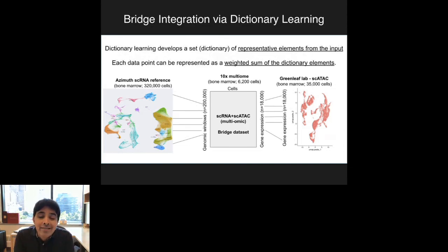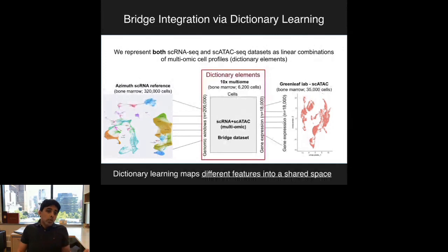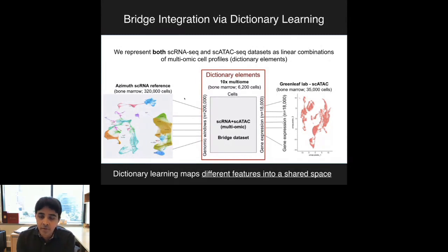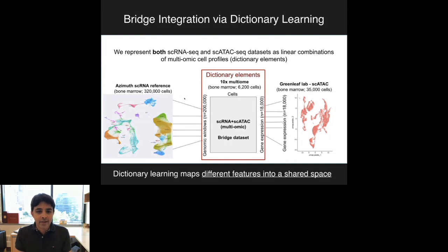Here's how dictionary learning comes in. We treat each cell in the multiome dataset as a dictionary element—the multiome dataset is the bridge, and each cell is a dictionary element. For each RNA-seq cell, we represent that cell as a weighted combination of dictionary elements, which we can do because the multiome cells each measure genome-wide RNA expression. For each single-cell ATAC-seq cell, we again represent it as a weighted combination of the same dictionary elements, because the multiome cells also measure ATAC-seq. So we represent both the RNA-seq and ATAC-seq datasets by the same dictionary—even though they originally measured different things, we've transformed them into the same space, and now we can map them readily one onto the other.